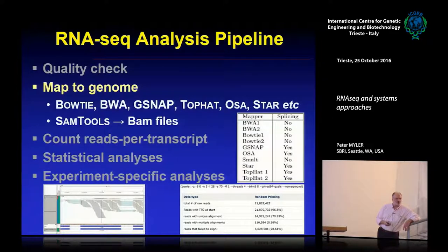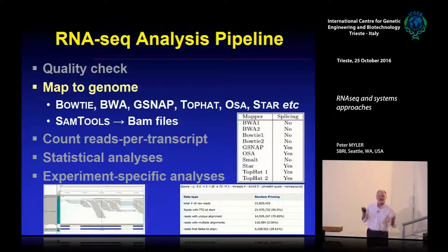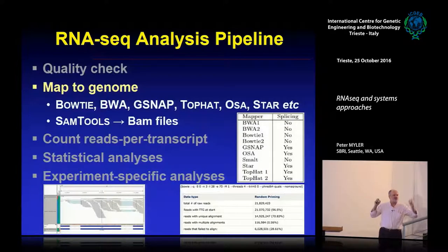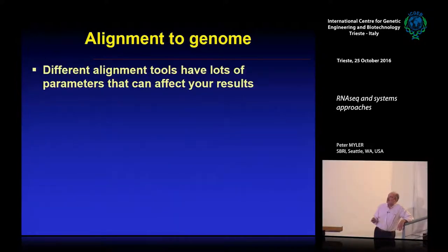You run your aligner — it'll probably take a day or two on a Linux machine with tens of gigabytes of memory — and you'll get a SAM file. You use SAMtools to convert it to a BAM file; each BAM file is about a gigabyte in size. You won't be able to read these files as text — they won't make sense — but this is the standard file format for aligned sequences.